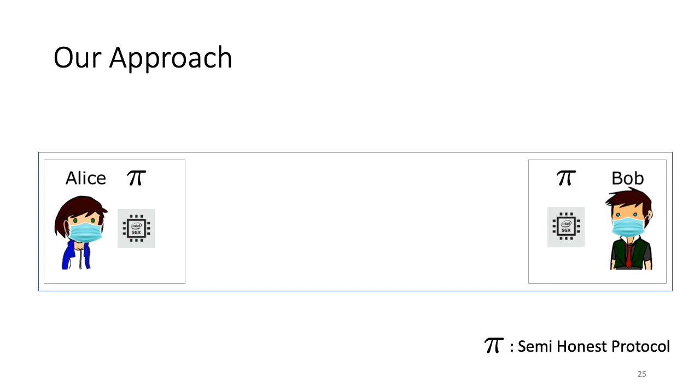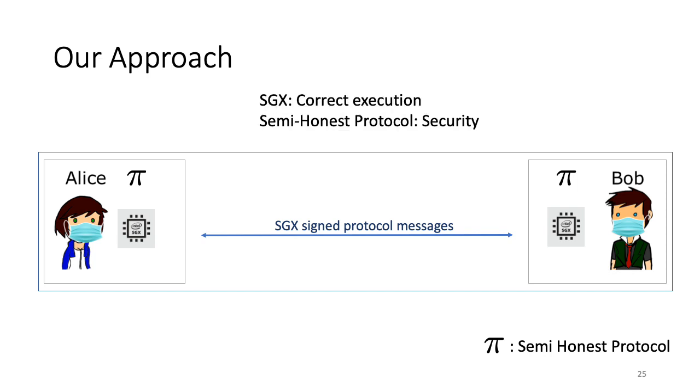Parties begin by proving to each other that they are running the correct unaltered code for Pi and that this code is loaded into SGX. For this, Alice first sends a message to Bob attesting to her honesty. Bob verifies this message and then does the same to prove his innocence. Once this is done, trust is established between the two parties. After this, the protocol execution can start and the parties will send signed messages back and forth, which will be verified to have originated from the secure environment by the other party before it accepts them. Here SGX provides the guarantee of correct execution and Pi, that is the semi-honest secure protocol, guarantees security.